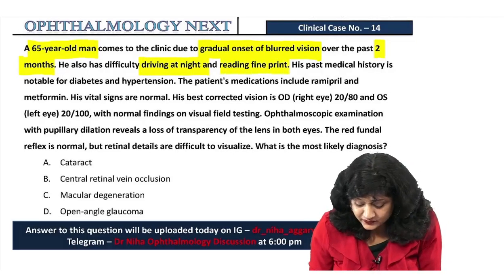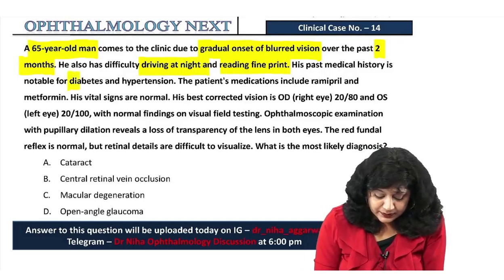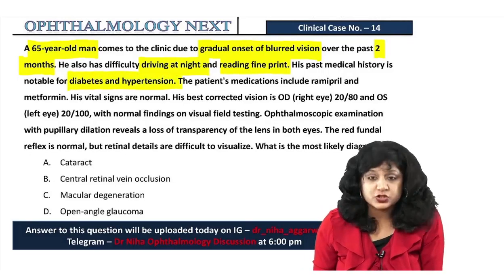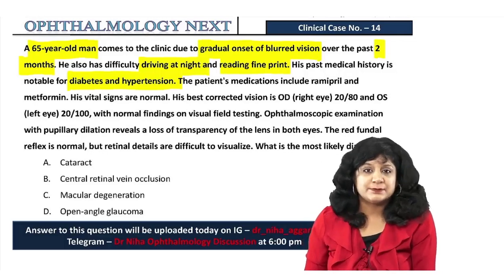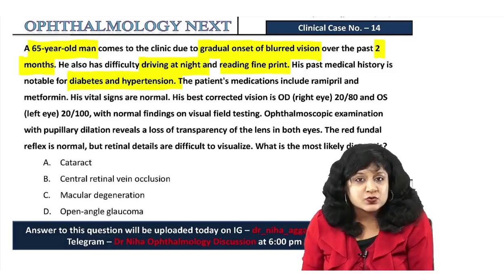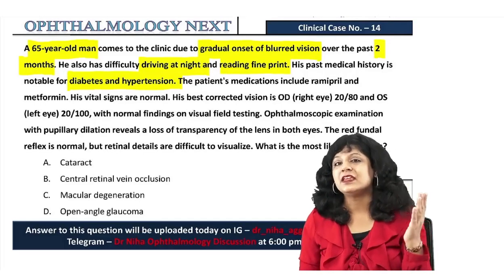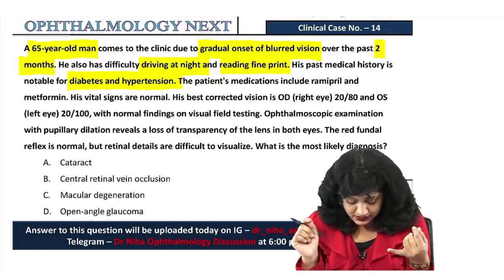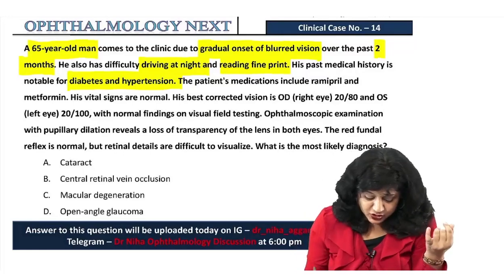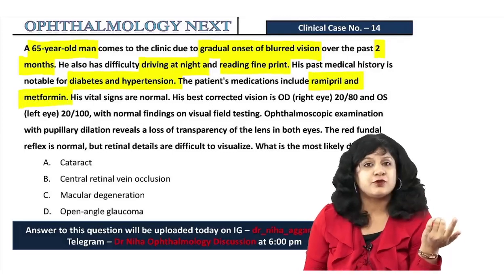He is also having difficulty driving at night and reading fine print. His past medical history is notable for diabetes and hypertension. His medications include ramipril and metformin, which are for hypertension and diabetes respectively.